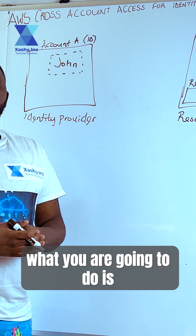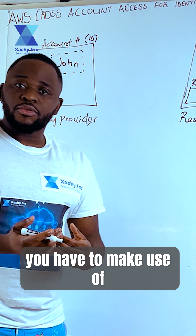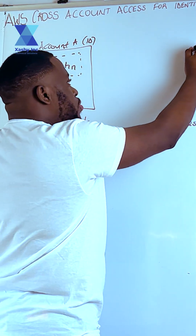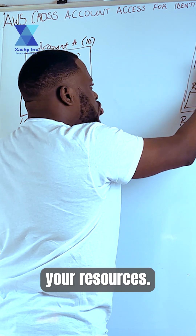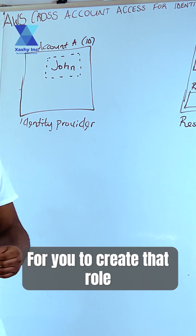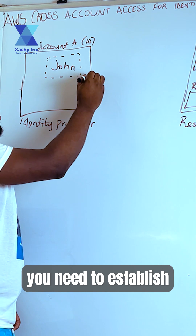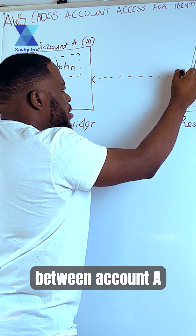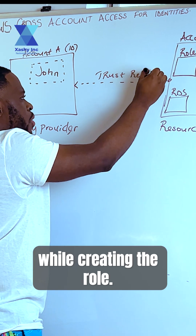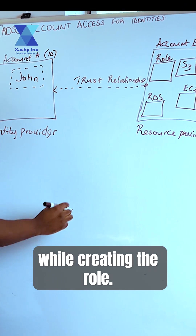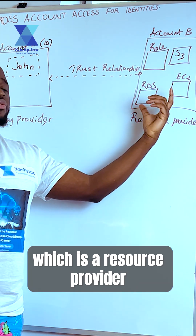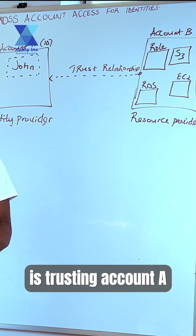In this scenario, what you are going to do is make use of roles. You need to create a role where you have your resources. For you to create that role, you need to establish a trust relationship between account A and account B. This relationship is simply saying that account A is trusting account B and account B, which is the resource provider, is trusting account A.